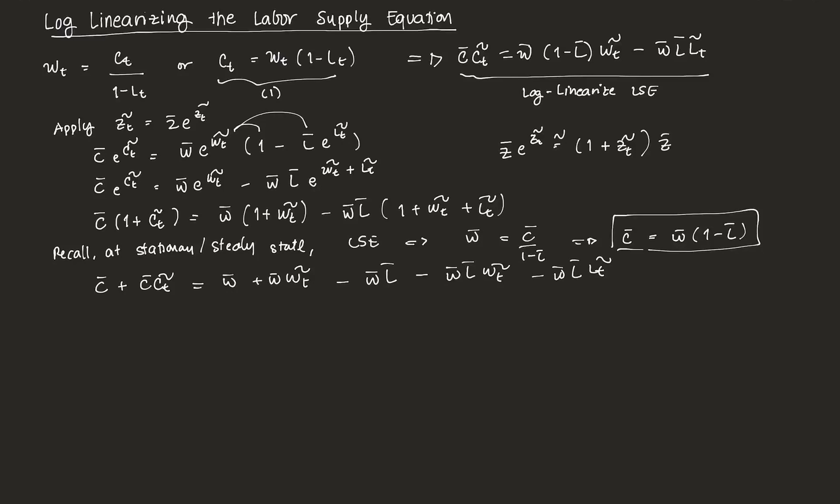So notice this will reduce to, if you simplify it further, this is C bar is equal to W bar minus W bar L bar. So you can see C bar on the left-hand side, that's this one. You can also see alone W bar here, and you can see alone minus W L bar there. So all of these from the left-hand side and the right-hand side is equal, so you can opt to cancel them off.